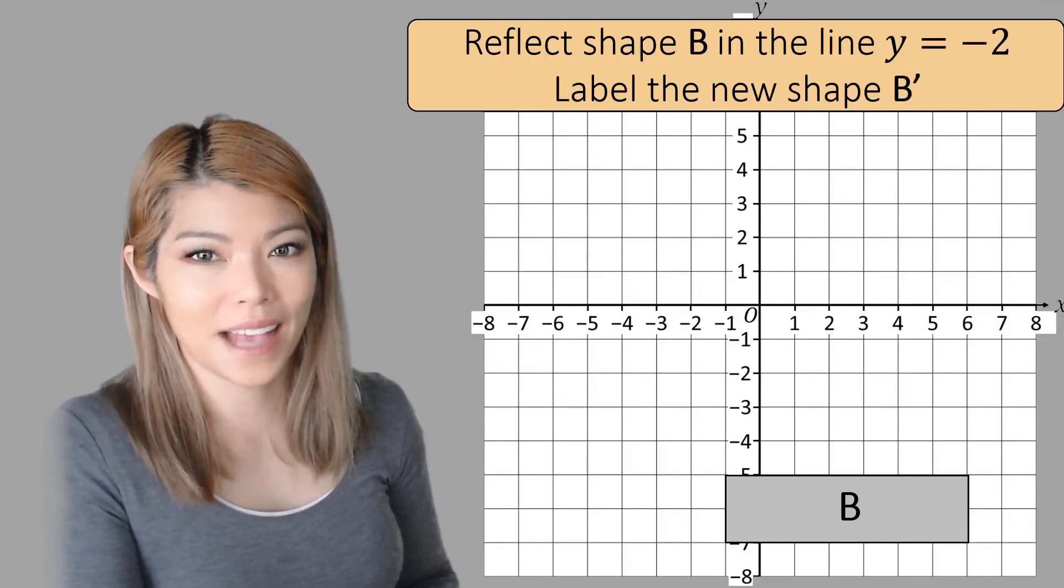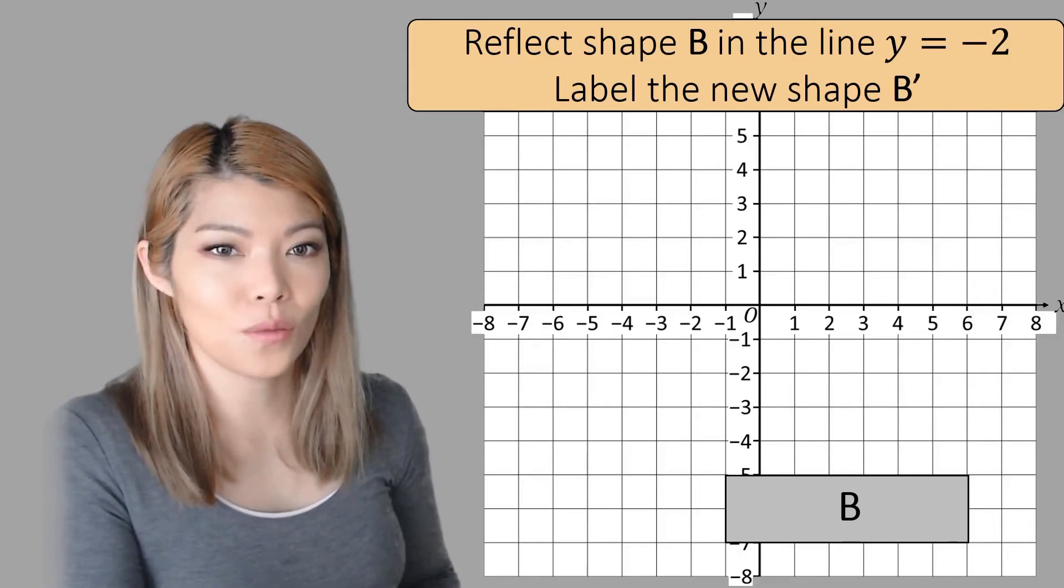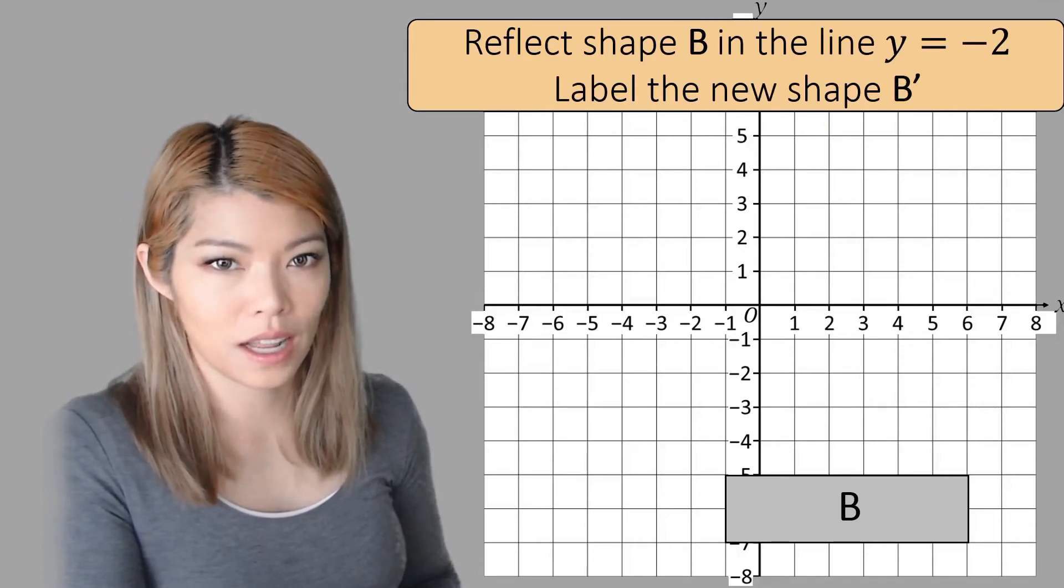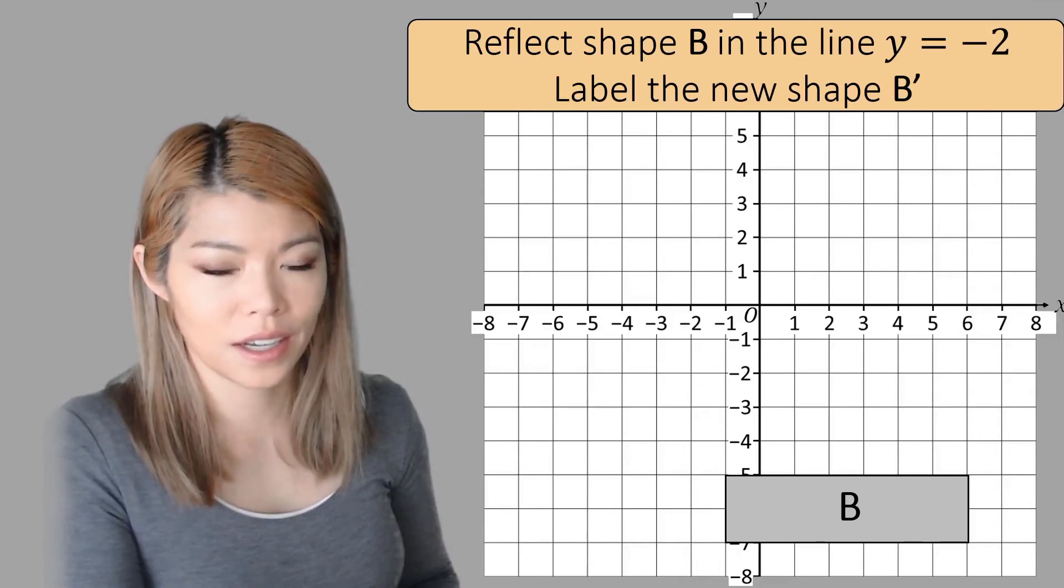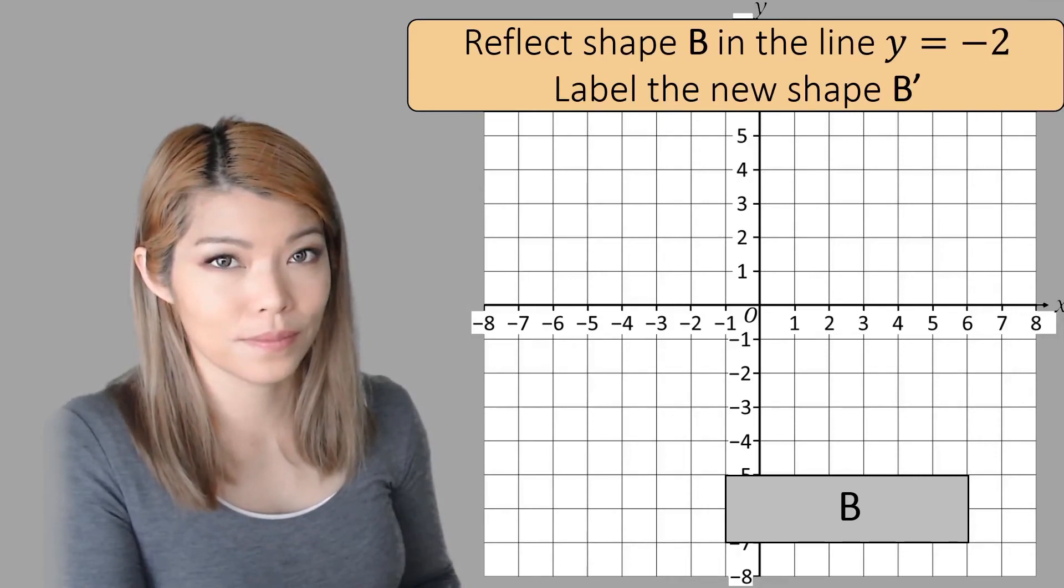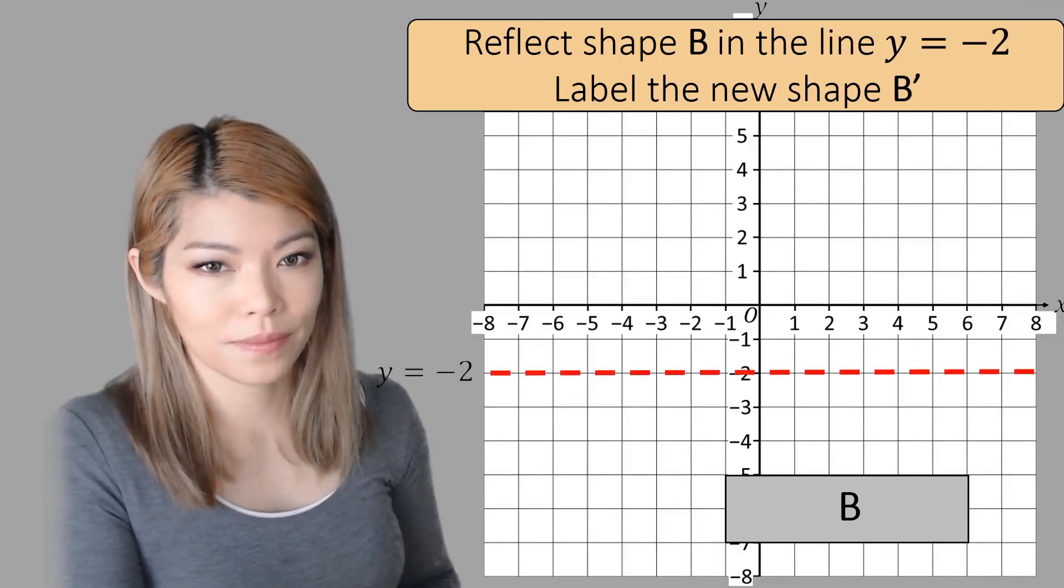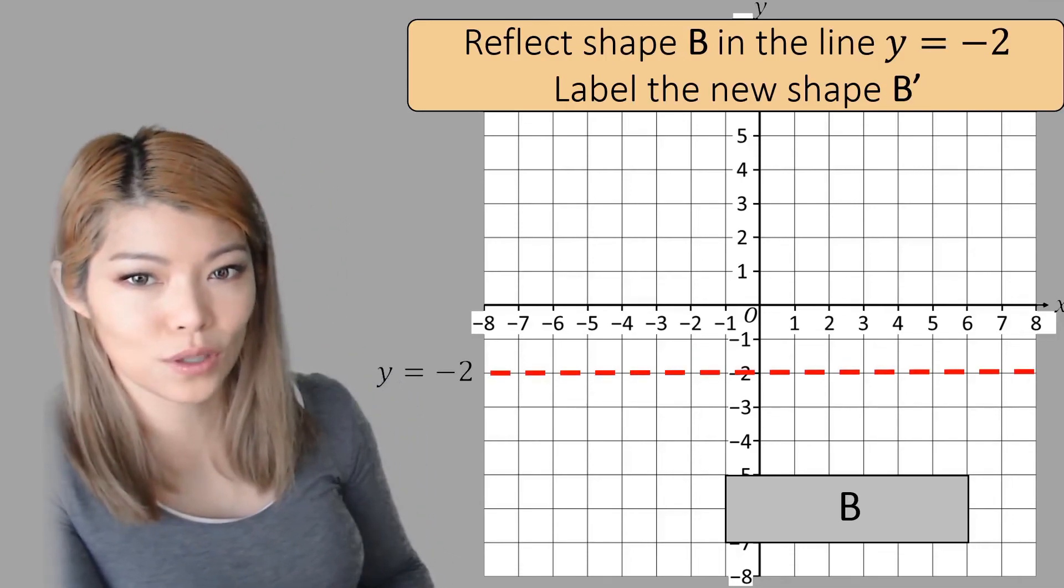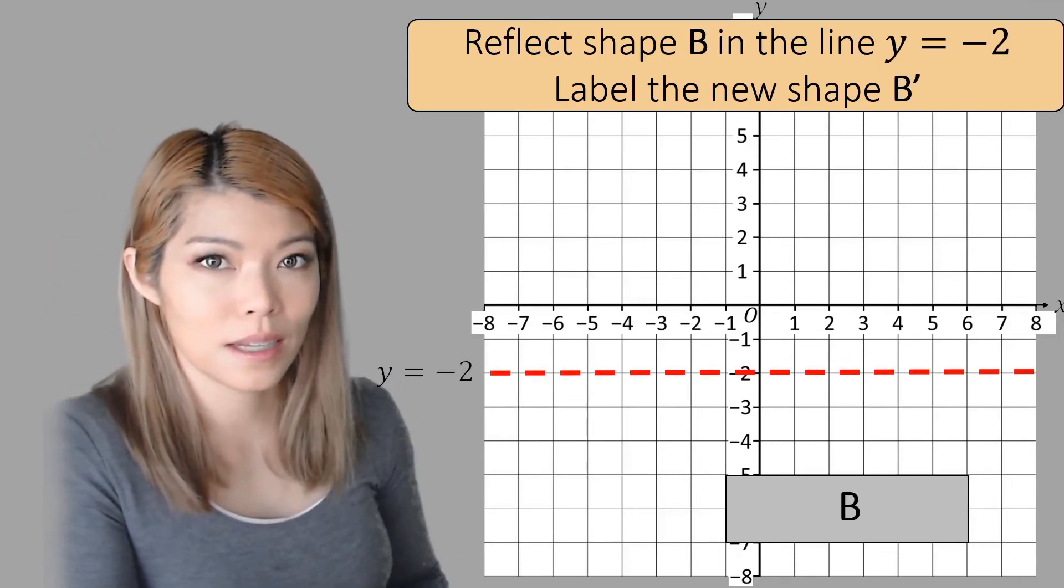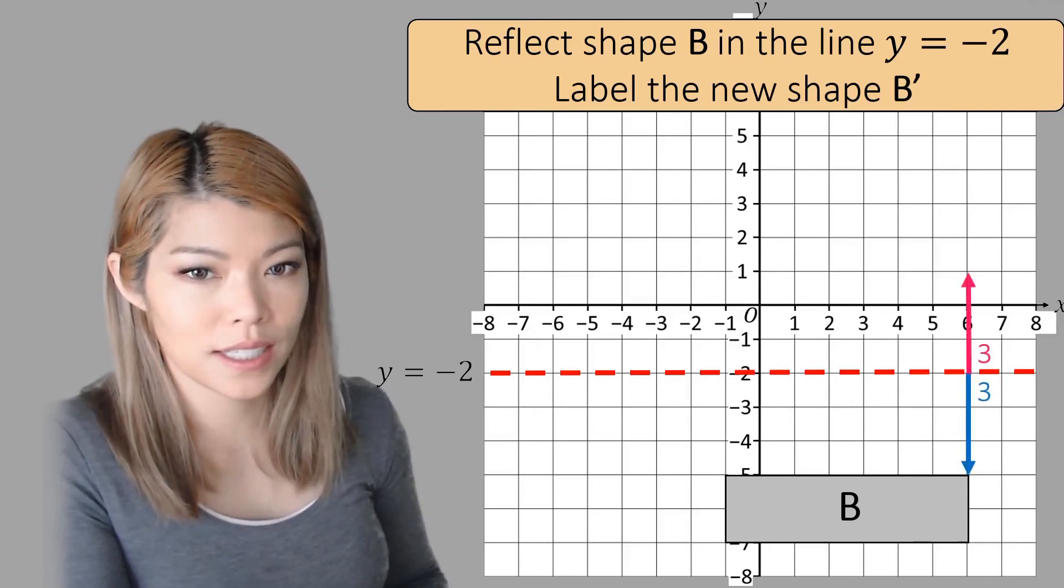One last example, here we have to reflect shape B in the line y equals negative 2. Label the new shape B', so what's the first step? Label the mirror y equals negative 2.